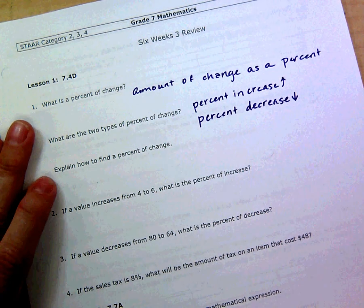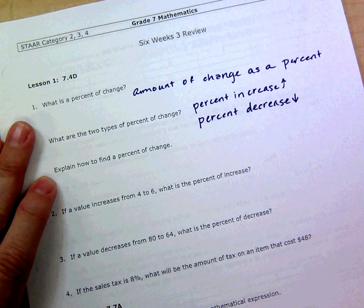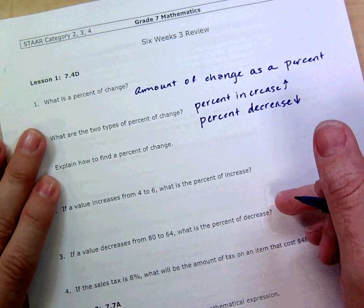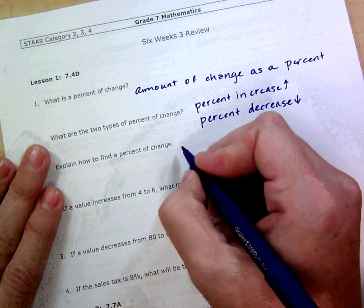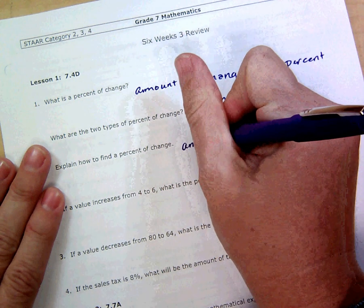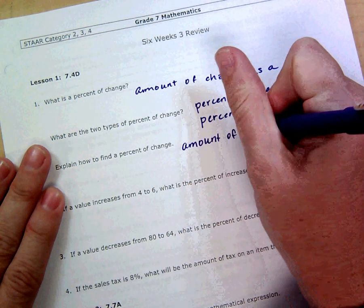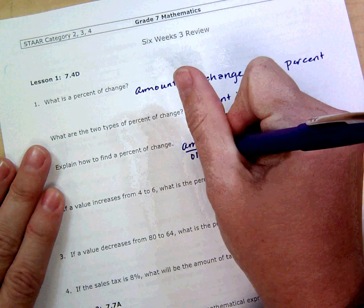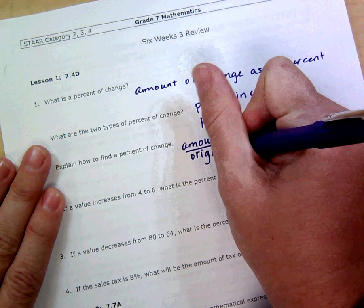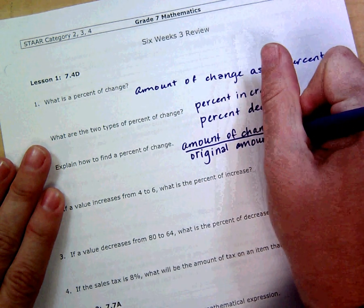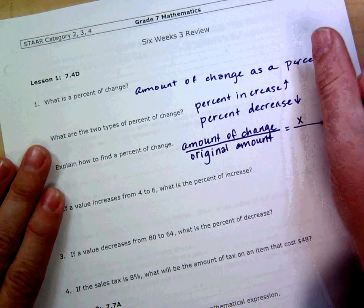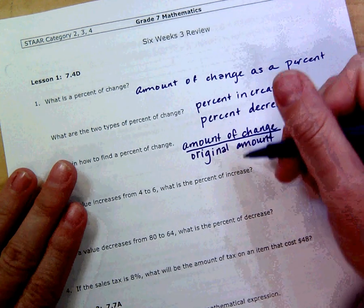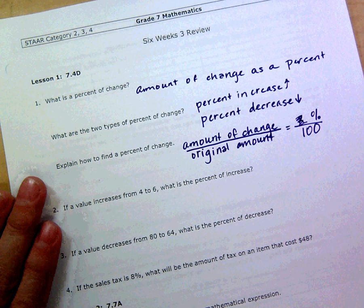Explain how you find a percent of change. Whenever you're finding a percent of change, this is the one that I wanted y'all so badly to have on your math chart but you have to memorize this. It is the amount of change divided by the original amount, or whatever the amount was first, is equal to the percent over 100.